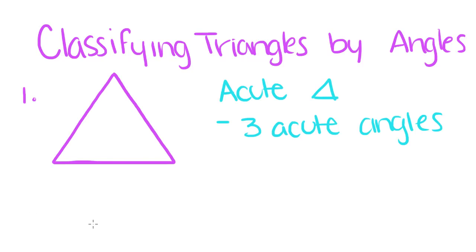First, there's the acute triangle, and like the name suggests, it's a triangle with three acute angles. And remember, an acute angle is just an angle that is greater than zero degrees and less than 90 degrees.